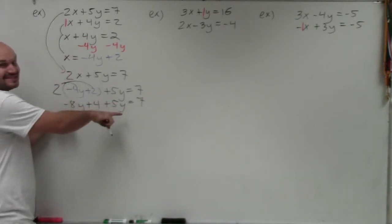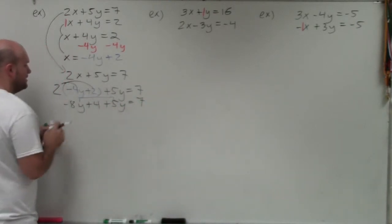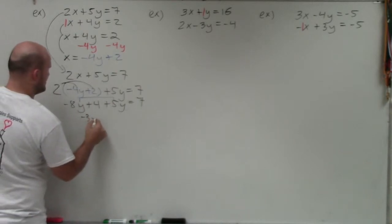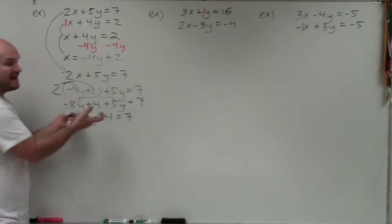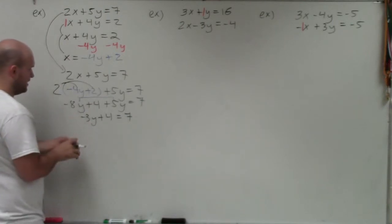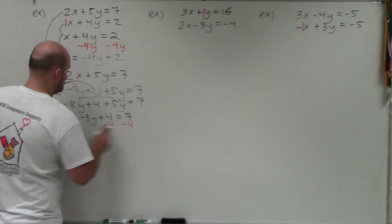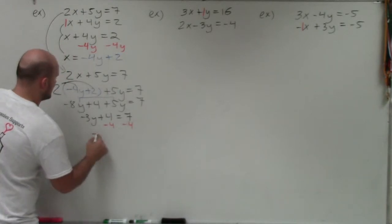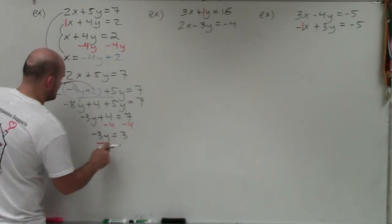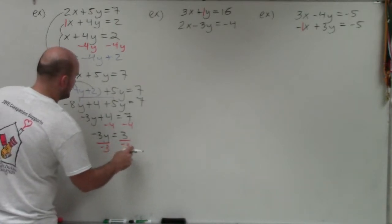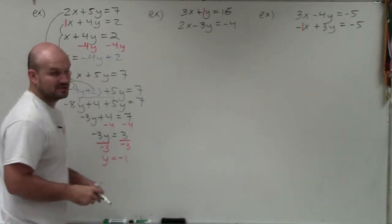I have two y-terms on the same side, so I combine them to get negative 3y plus 4 equals 7. Subtracting 4 from both sides gives negative 3y equals 3. Dividing both sides by negative 3, I get y equals negative 1.